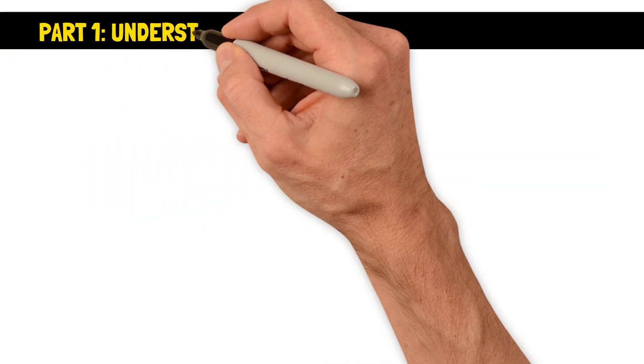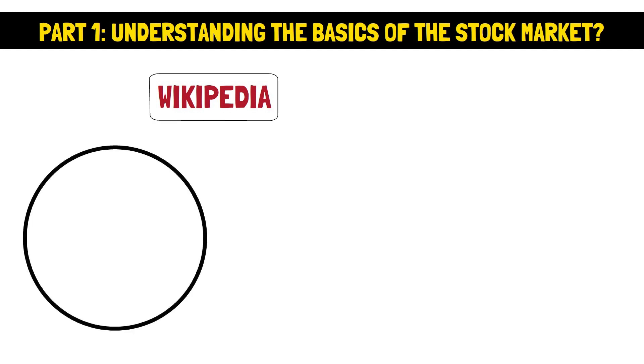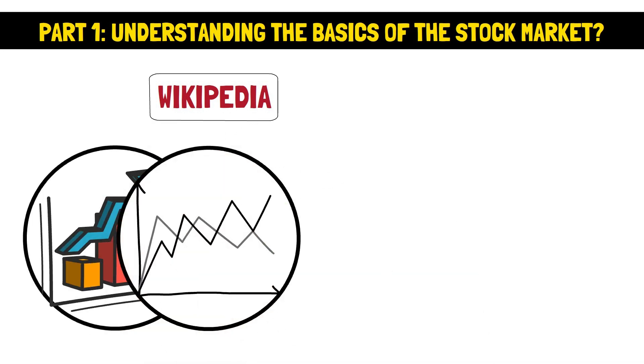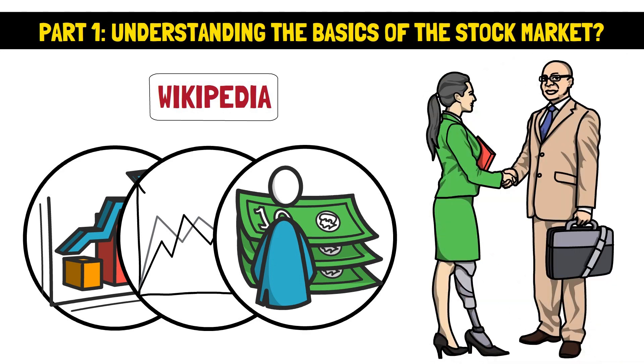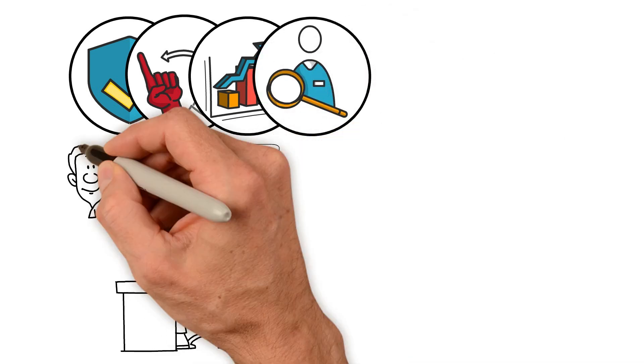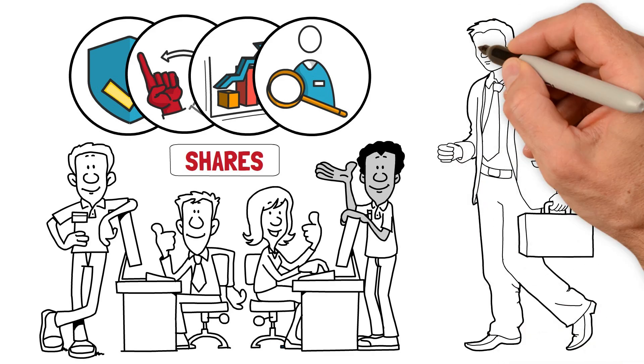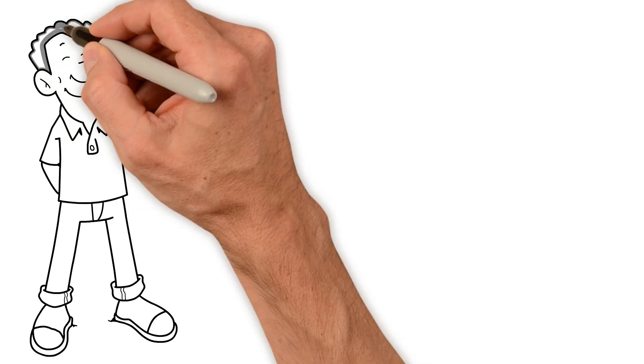Part 1: Understanding the basics of the stock market. According to Wikipedia, a stock market, equity market, or share market is the aggregation of buyers and sellers of stocks, also called shares, which represent ownership claims on businesses. These may include securities listed on a public stock exchange, as well as stock that is only traded privately, such as shares of private companies that are sold to investors through equity crowdfunding platforms. Investments are usually made with an investment strategy in mind.